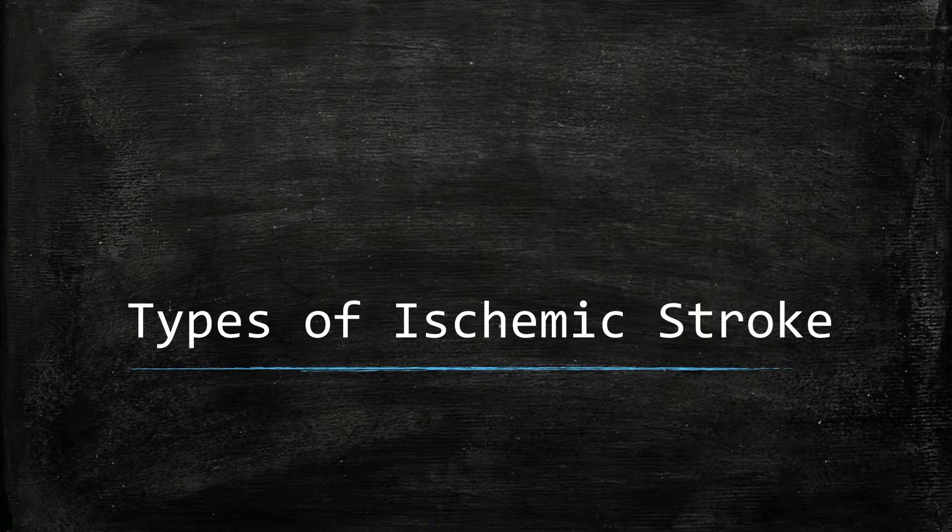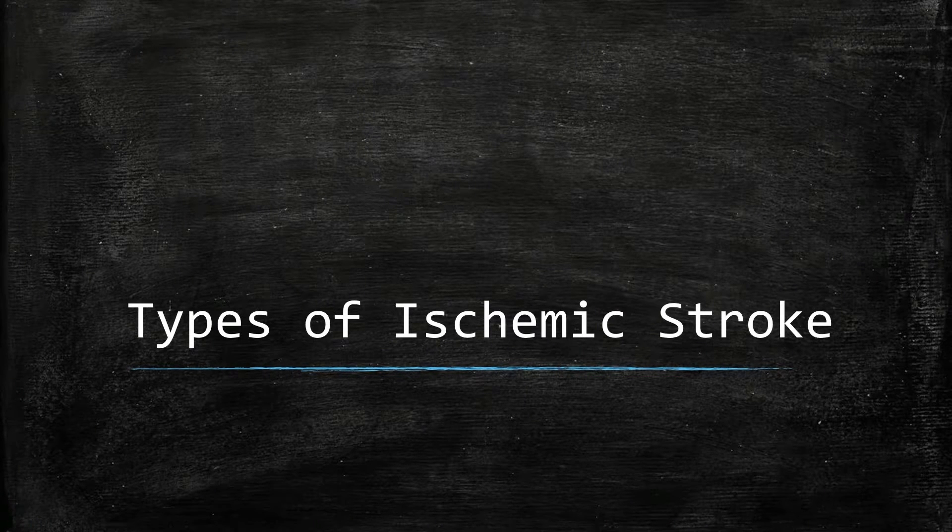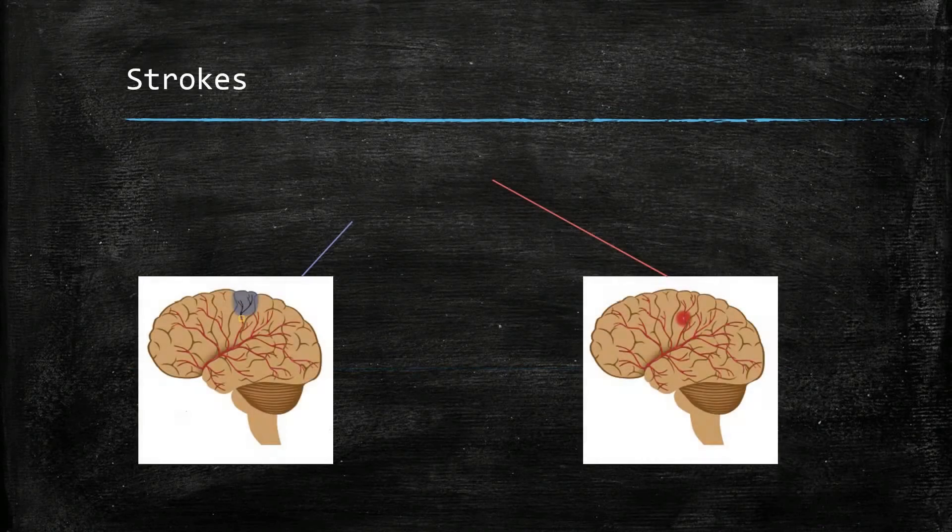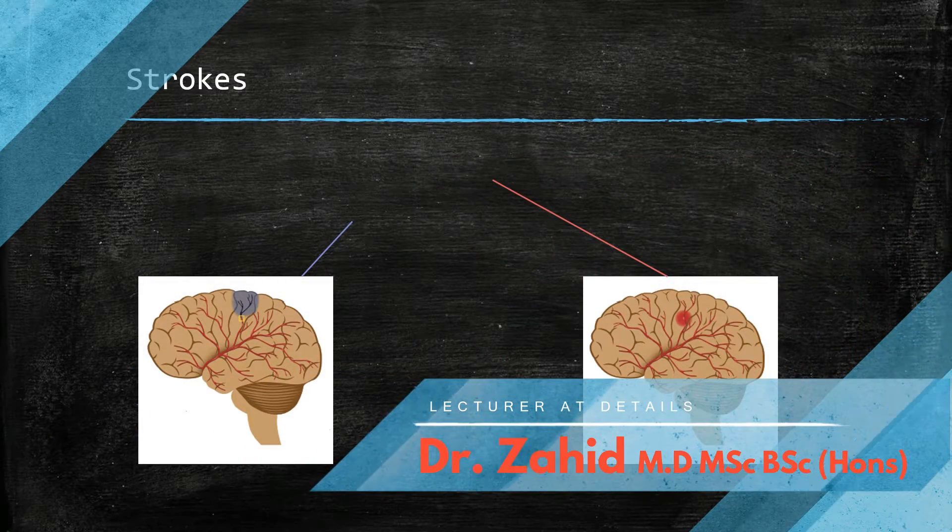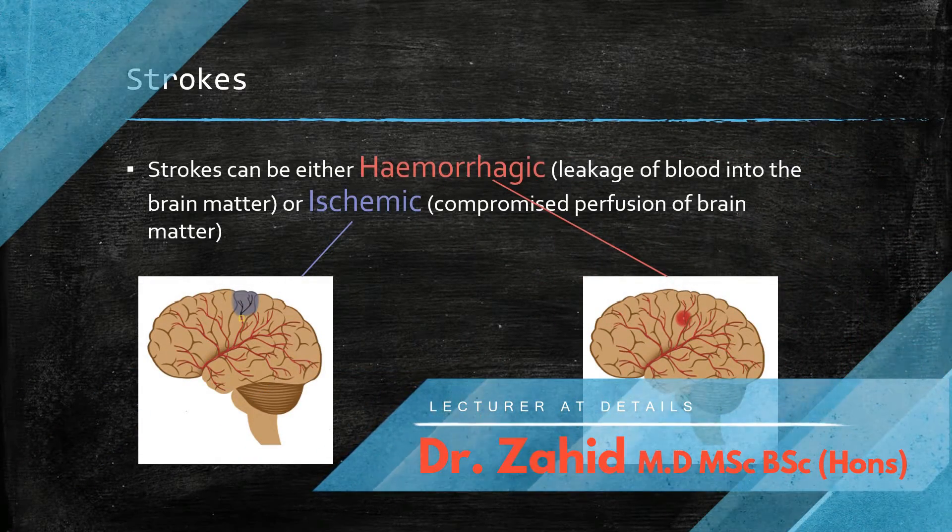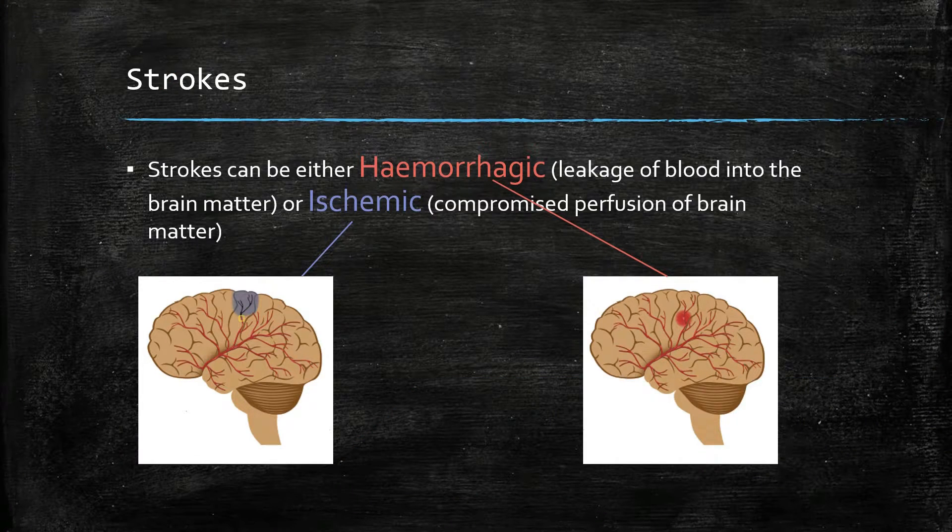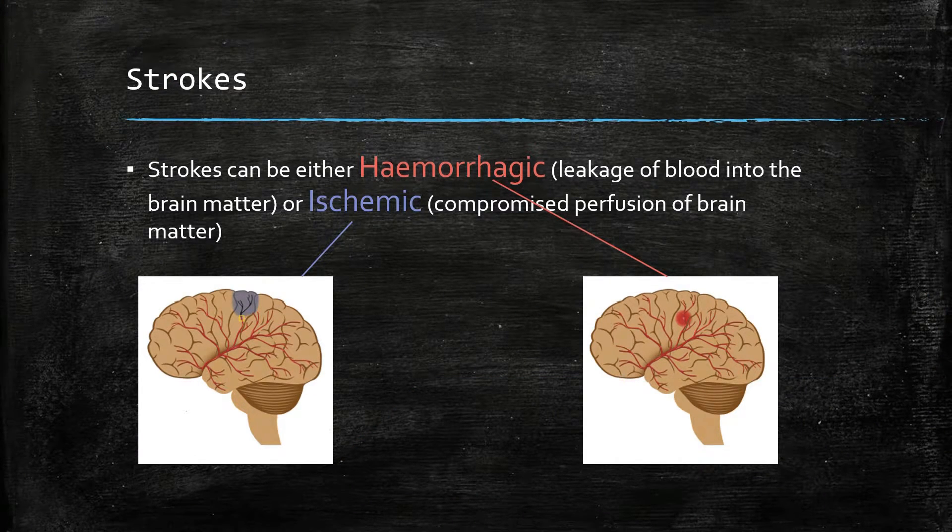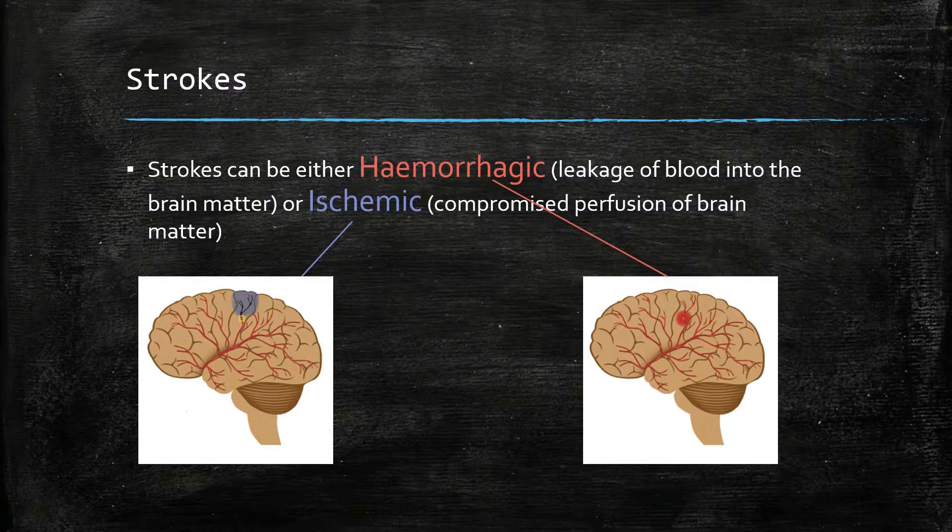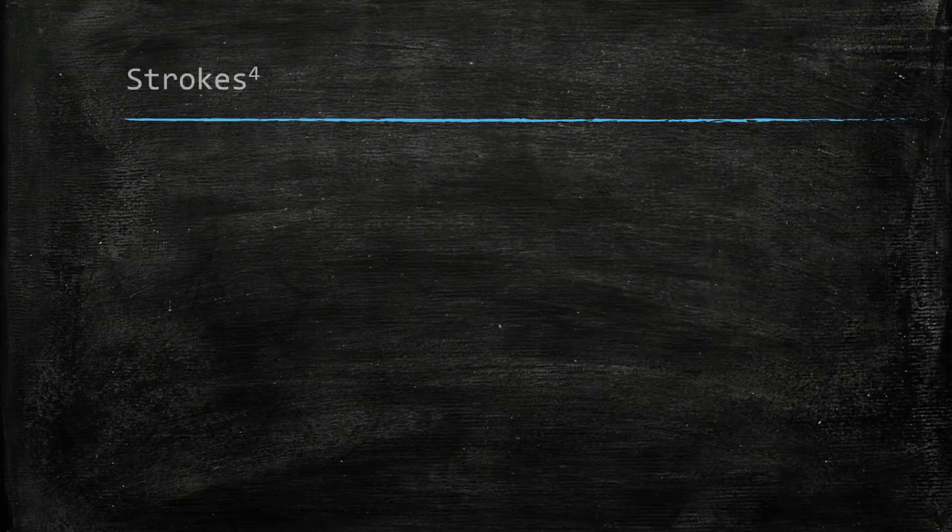Strokes are categorized into hemorrhagic or ischemic. Hemorrhagic strokes involve blood leakage into the cerebral matter, whereas ischemic strokes are the result of compromised perfusion of the brain. The majority of strokes, however, are ischemic.